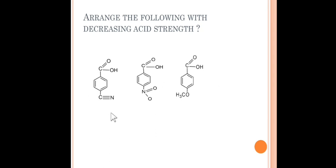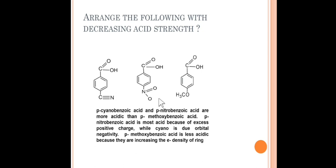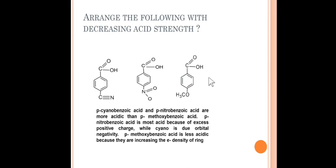Among para-cyanobenzoic acid and para-nitrobenzoic acid, para-nitrobenzoic acid is more acidic because of the excess positive charge or greater number of canonical structures and delocalization of the nitro group. Cyanobenzoic acid is less acidic than nitrobenzoic acid. So in decreasing order: para-nitrobenzoic acid first, then para-cyanobenzoic acid, then para-methoxybenzoic acid.